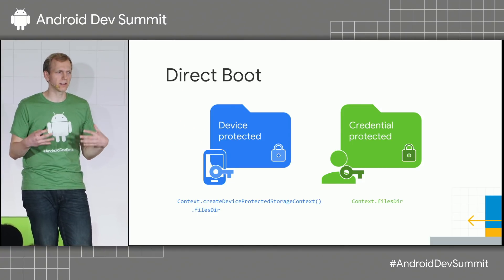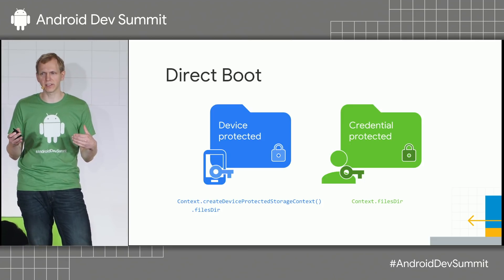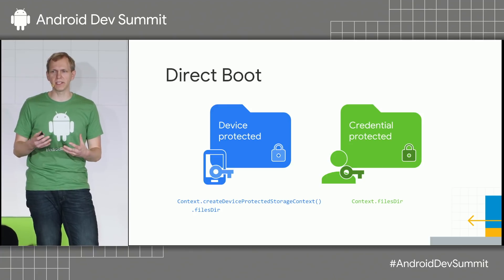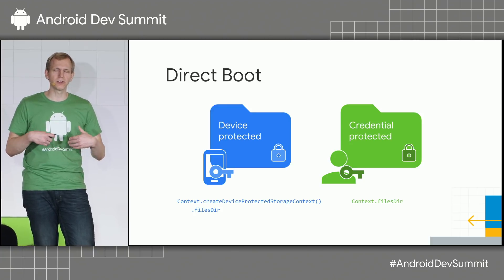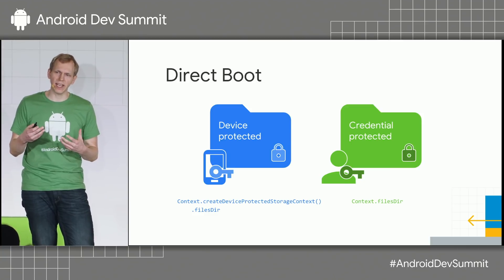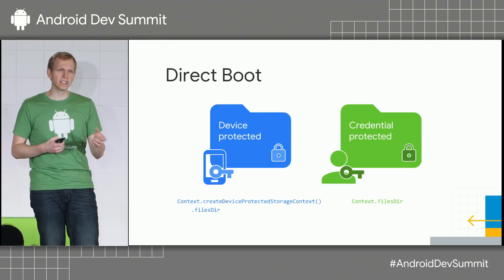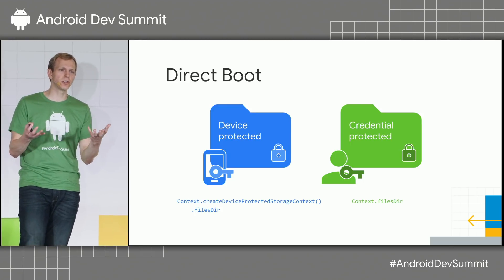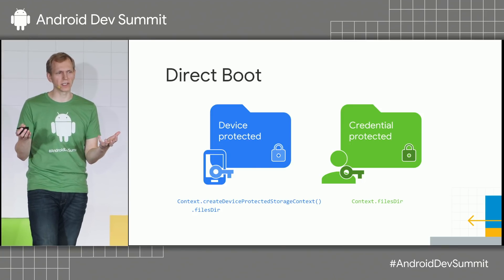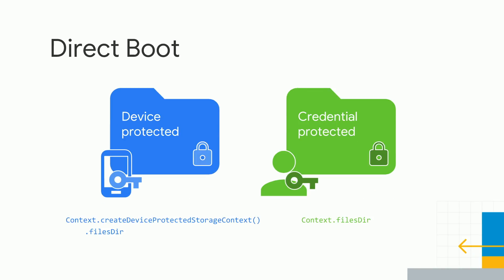We built the direct boot feature in the Android N release to solve an important problem. Before the N release, when an Android device was encrypted and the user rebooted it, no apps could run until after the user had entered their credentials — a PIN, pattern, or password. So in the N release we created two storage areas that are still encrypted, but encrypted with two different keys: the device protected area and the credential protected area.